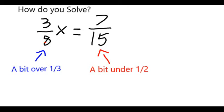So 3 eighths is a bit over a third. I want to multiply that by something and get a bit under one half. So a third of something has to be around a half. We would expect that something has to be a little bit bigger than one.